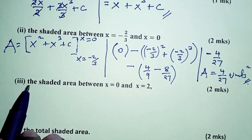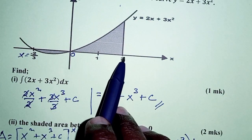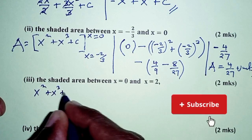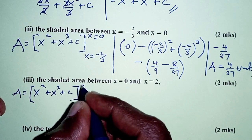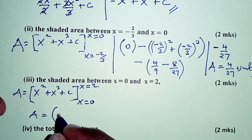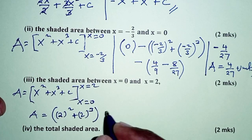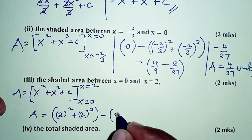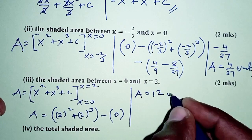Next, we find the shaded area between x equals 0 and x equals 2. Using the same expression x squared plus x cubed, evaluated from 0 to 2: substituting the upper limit x = 2 gives 2² plus 2³ equals 4 plus 8 equals 12. Substituting x = 0 gives 0. So the area is 12 square units.